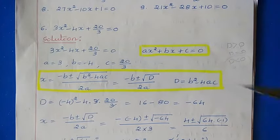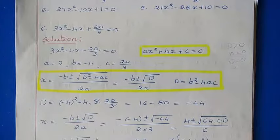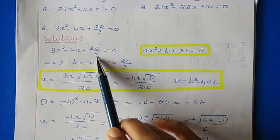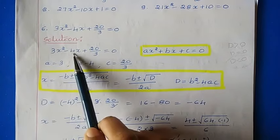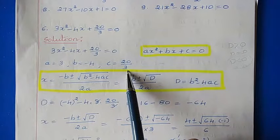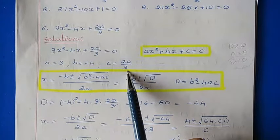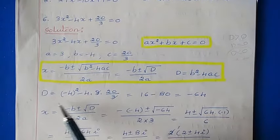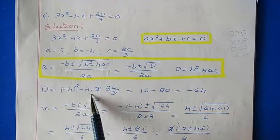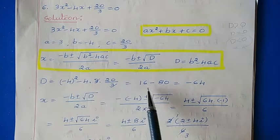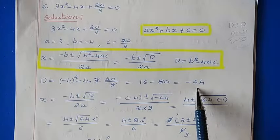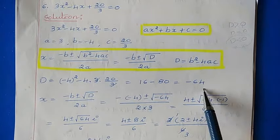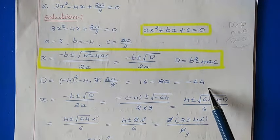Problem 6: 3x² - 4x + 20/3 = 0. First, compare with ax² + bx + c = 0 to find a, b, and c. Here a = 3, b = -4, and c = 20/3. Now find the discriminant d = b² - 4ac = (-4)² - 4 × 3 × (20/3) = 16 - 80 = -64. The discriminant is less than 0, confirming this is the complex number (imaginary) case.